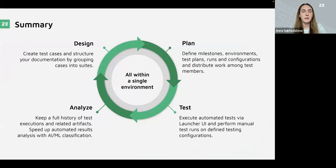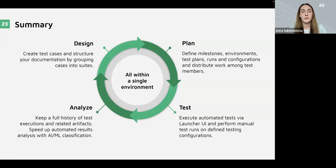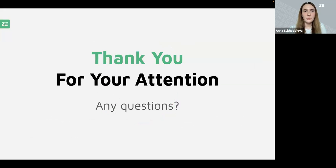Let's sum up the Zebrunner testing platform. This is basically a unified test management and automation reporting tool where you can design your test cases, plan milestones and scope of testing, execute automated tests, and perform manual test runs. As a final result, you can also analyze and report your results — all within a single environment. This definitely improves communication and collaboration between manual and automated teams and other stakeholders, and also provides a clear overview of testing progress in general, which helps to increase transparency of the project and its health in general.